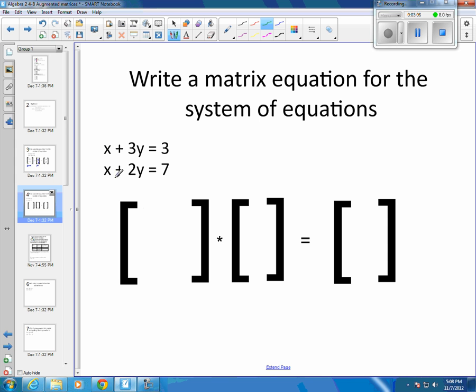So I've got a 1 in front of this x, so that's a 1. I've got a 3 in front of this y, so that's a 3. I've got a 1 in front of this x, so it's a 1. And I've got a 2 in front of this y, so it's a 2. And then I've got my x's and y's, so I'm going to have my x and my y. And then I've got my 3 and my 7, so I'm going to have my 3 and my 7.